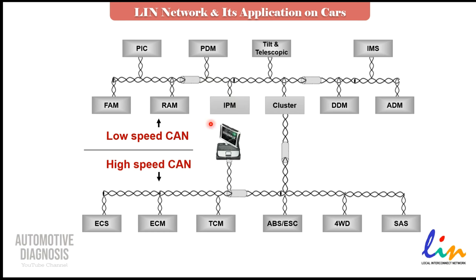Critical systems like engine, brake, and transmission use high-speed CAN because information must be shared as quickly as possible. Less critical systems use the body CAN at lower speed. Using lower speed also means the total cost of creating those control units is less than the high-speed ones.